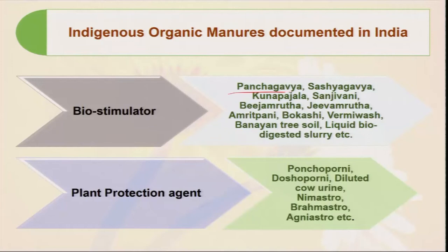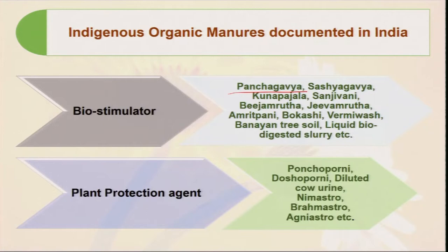We have documented different types of indigenous organic manures in India such as Panchagavya. Why is it called Panchagavya? Because five products are obtained from a cow — cow urine, cow manure, ghee, dahi, and others — there are standard preparation procedures which I will explain in later lectures. There is also Swaasthagavya, Kunapajala, Sanjivani, and newer preparations like Bijamrita and Jivamrita. There is science behind all of these. When we apply these things along with organic manure and organic package of practices, they stimulate plant growth and also enhance yield.